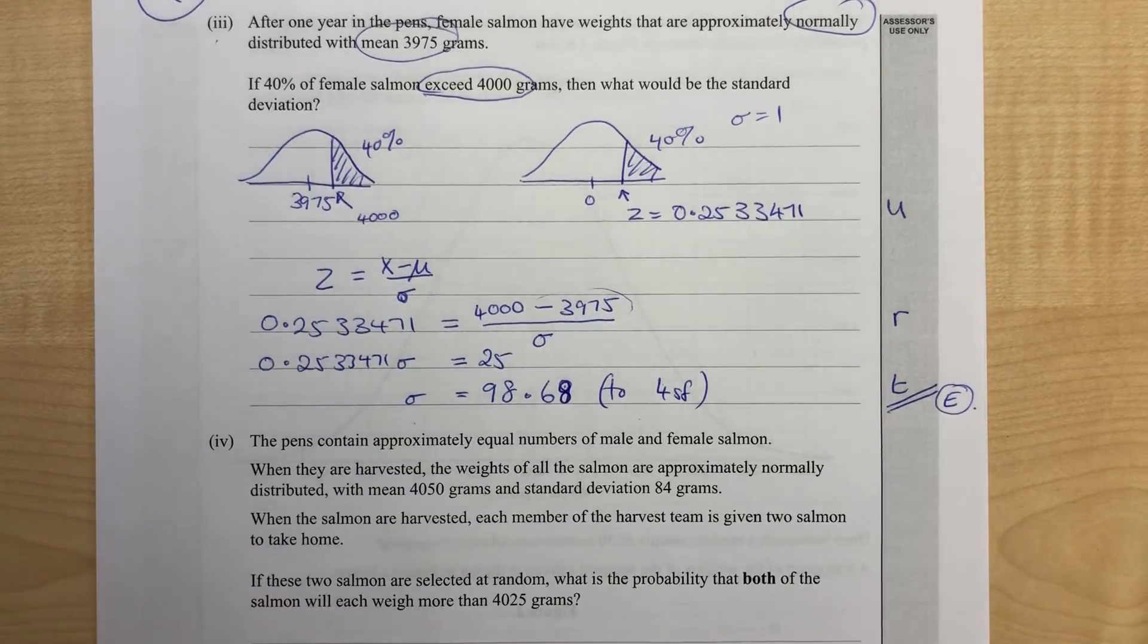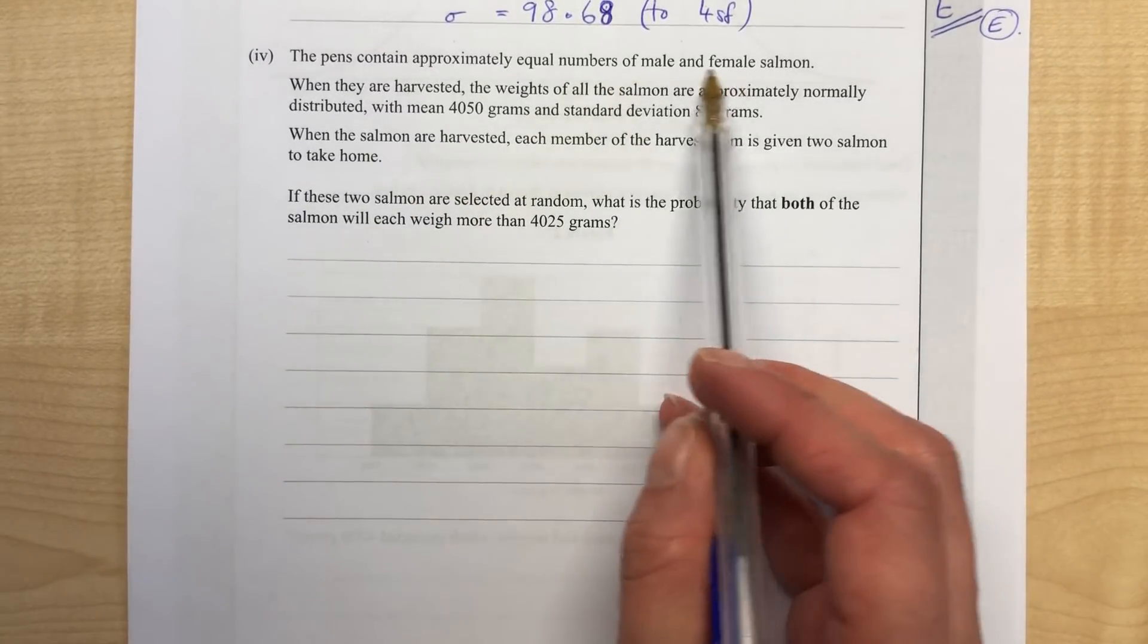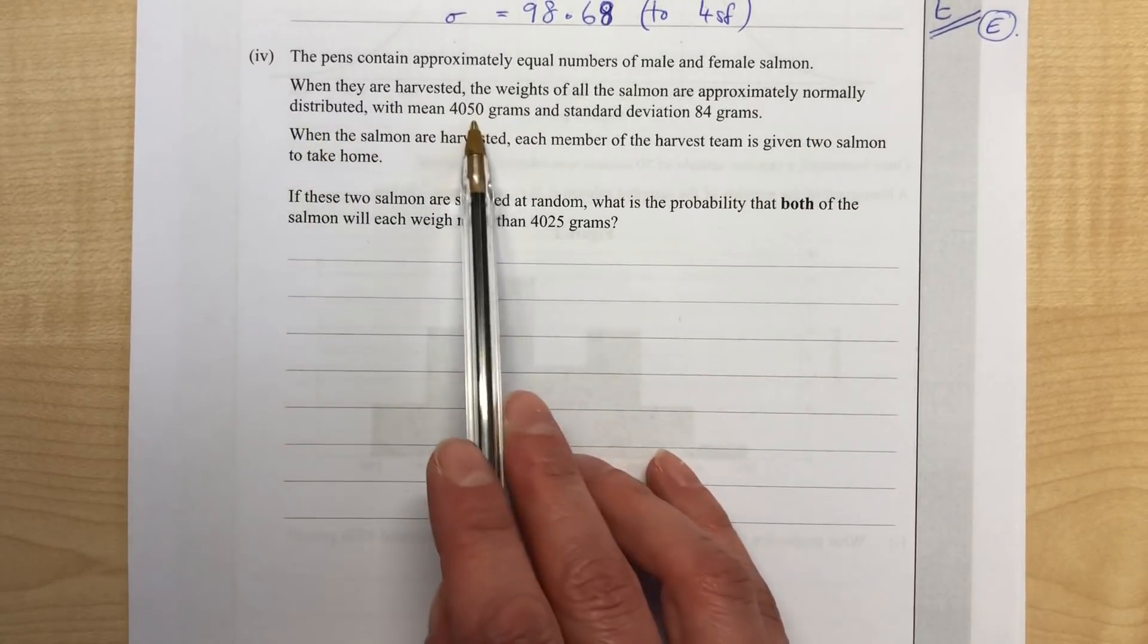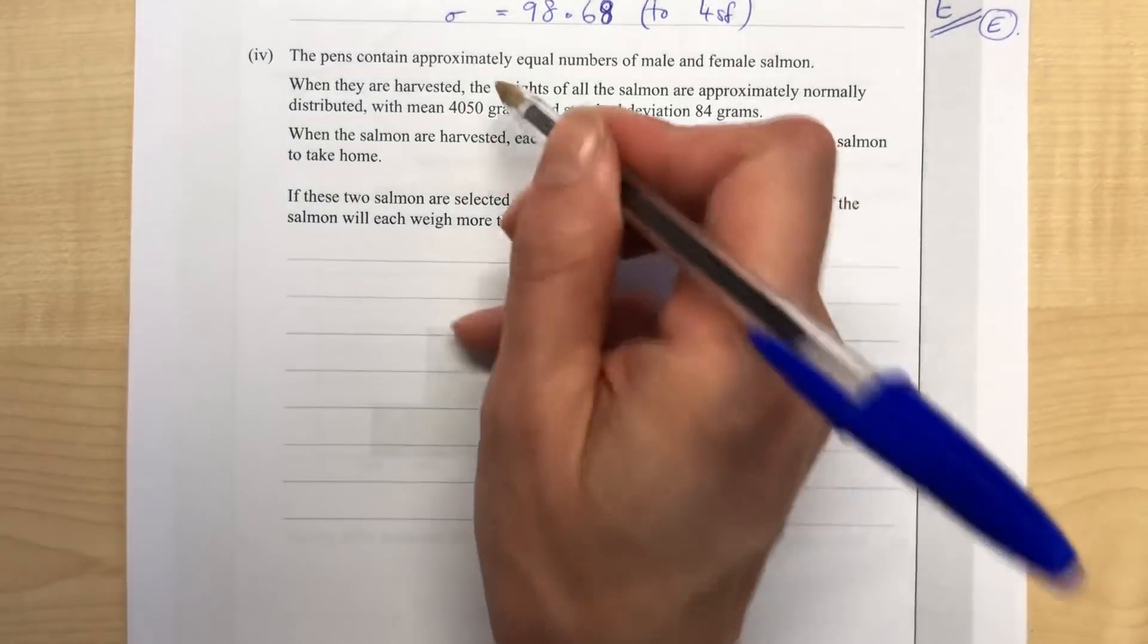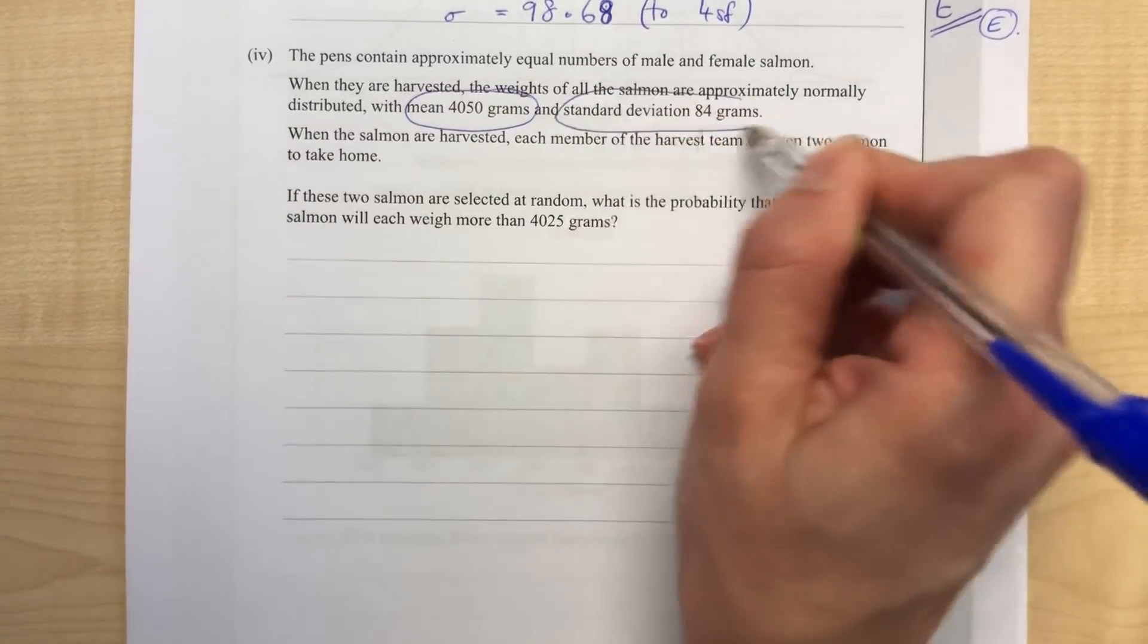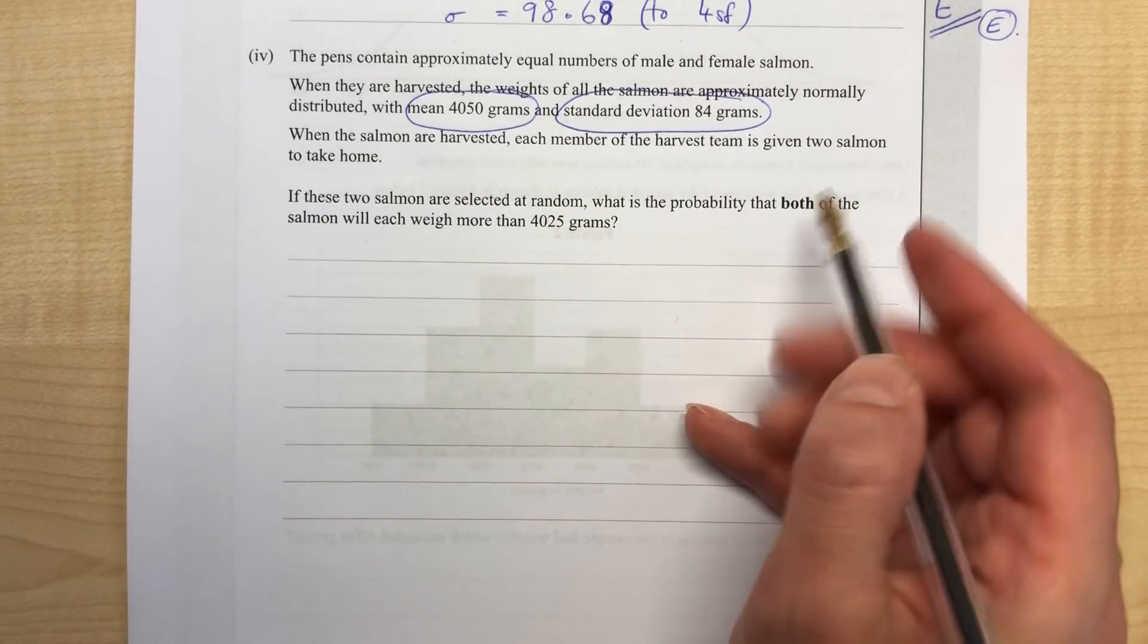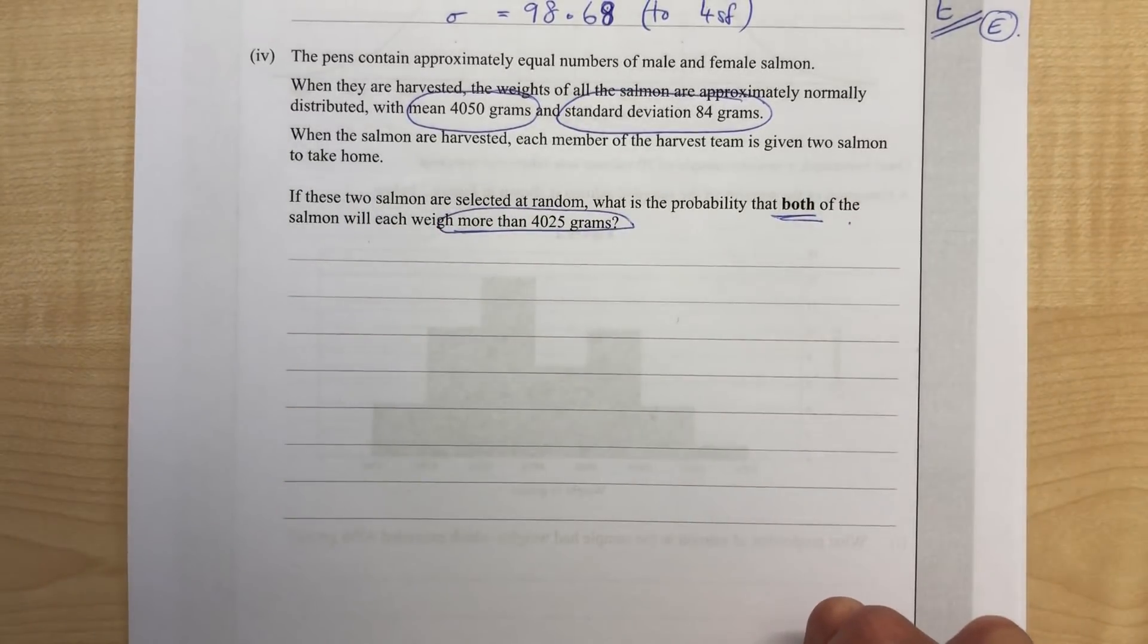Let's have a look at part 4. The pens contain approximately equal numbers of male and female. When they're harvested, weights of all salmon are normally distributed. Each member of the harvest team is given two to take home. Two of the salmon are selected at random. What's the probability that both of them will be more than 4025?